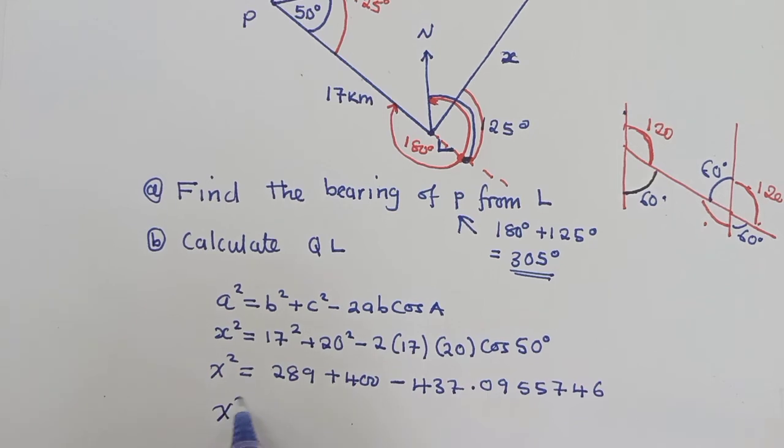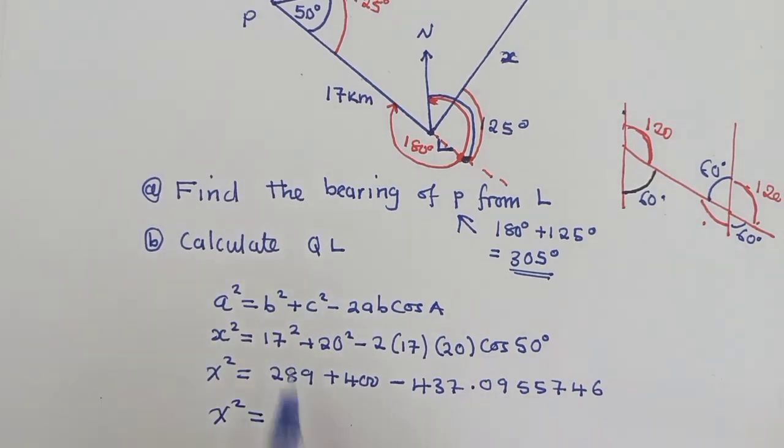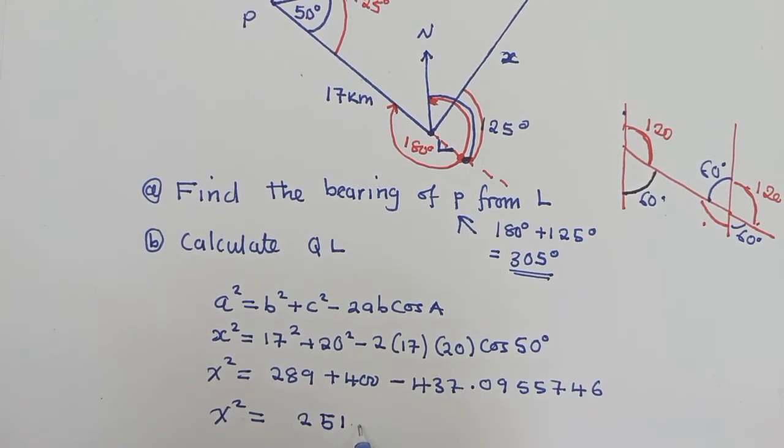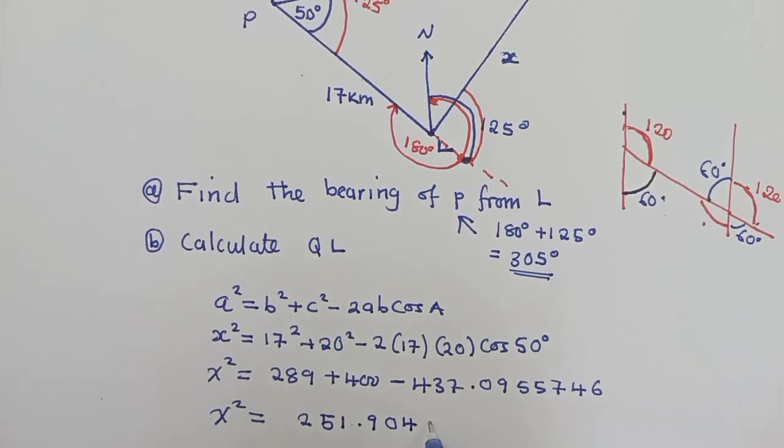So we will say X squared is equal to, we now punch everything on our calculator. So we have 289 plus 400 minus 437.0955746. We are getting 251.9044254.